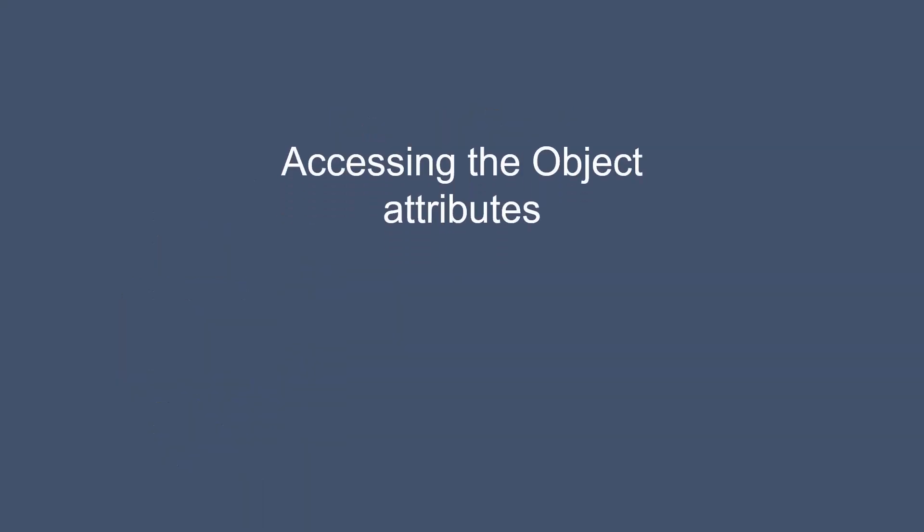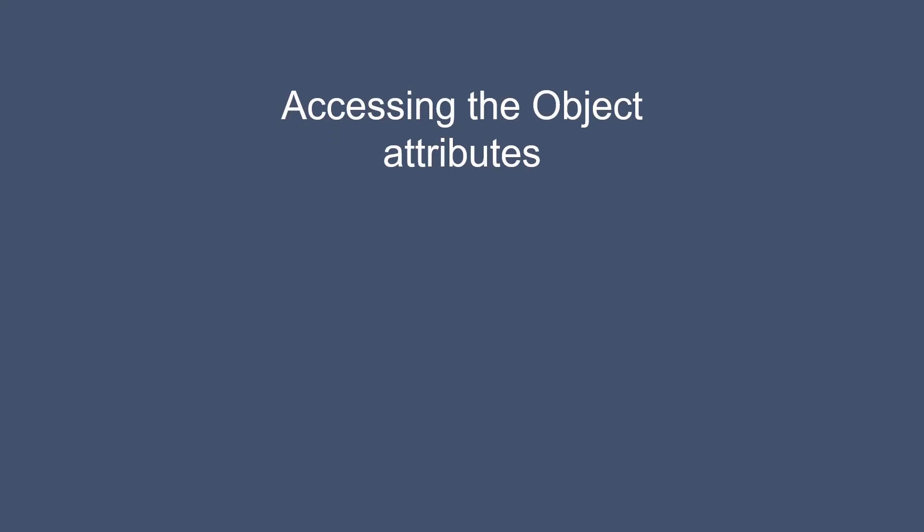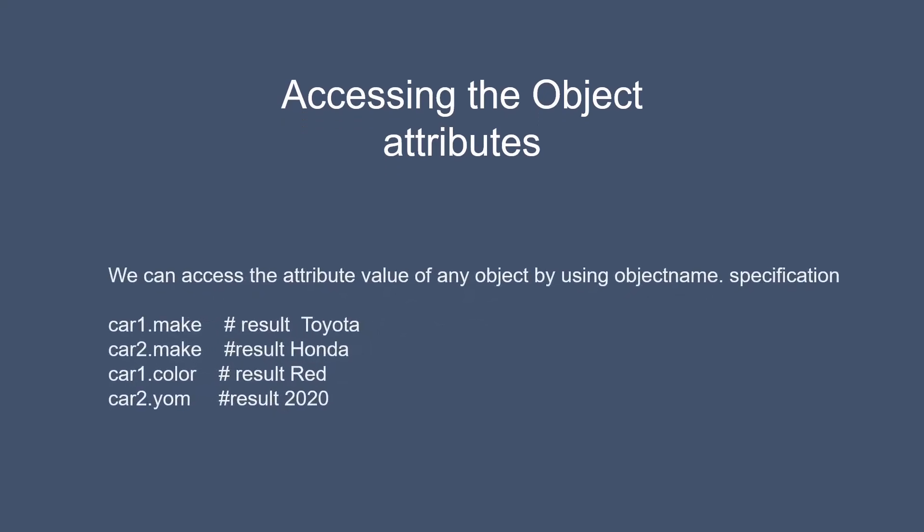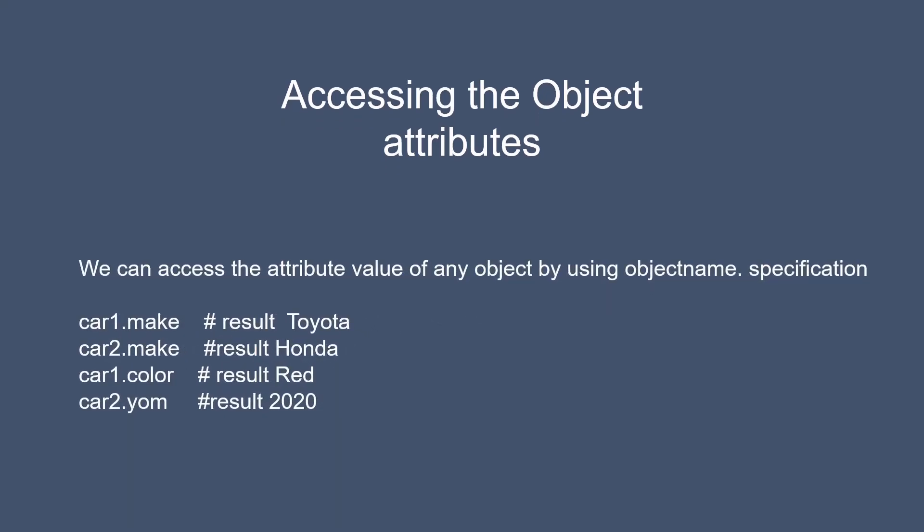We can access the attribute value of any object by using object name dot specification. For example, if we want to view the make of object car1 then we can access the value like this: car1.make, and the result will be Toyota. And if we want to see the value of car2 object color then we can access it by using car2.color. You can access any object specification by using this method.